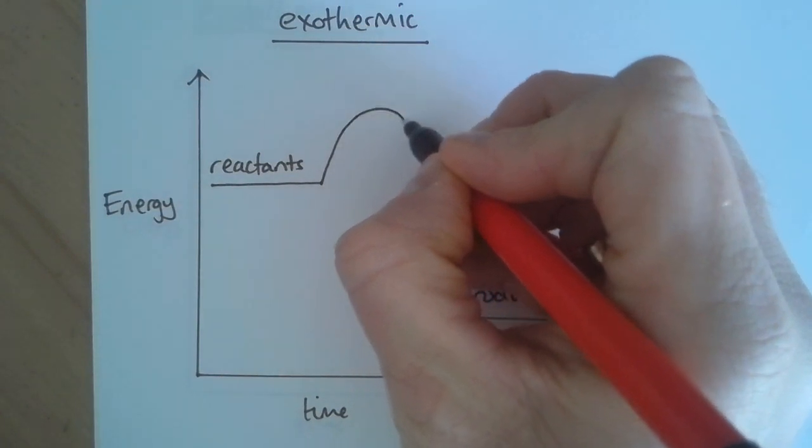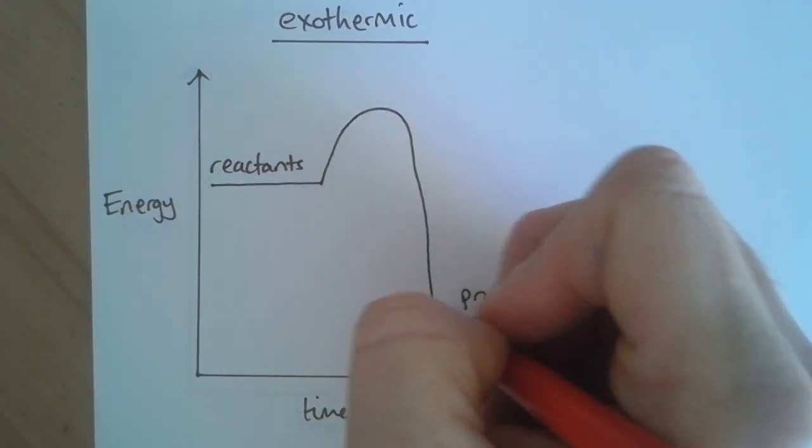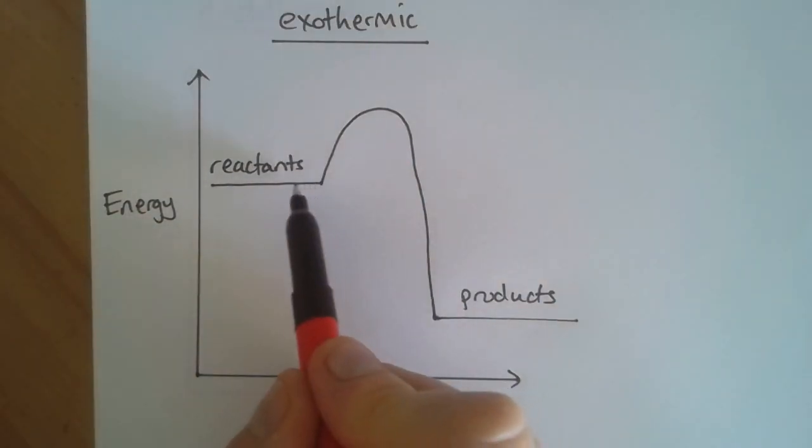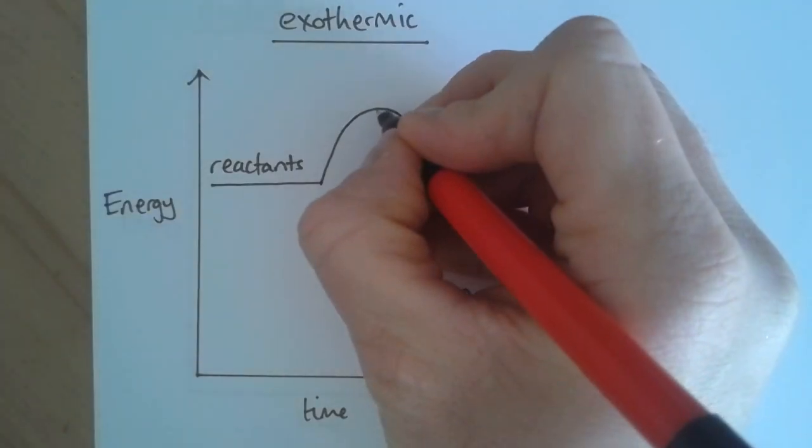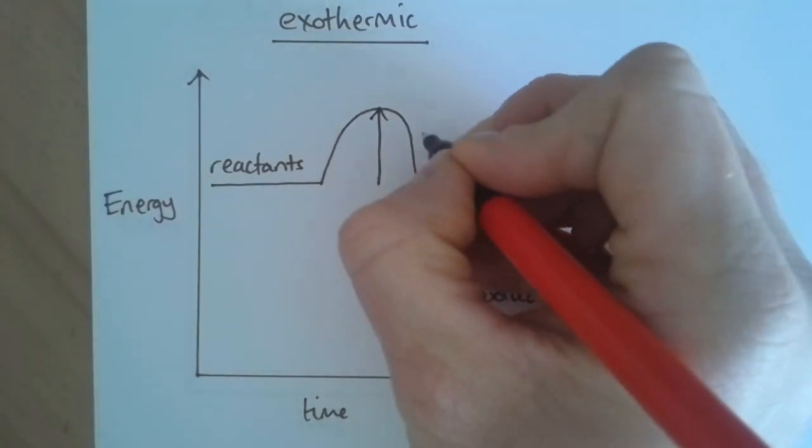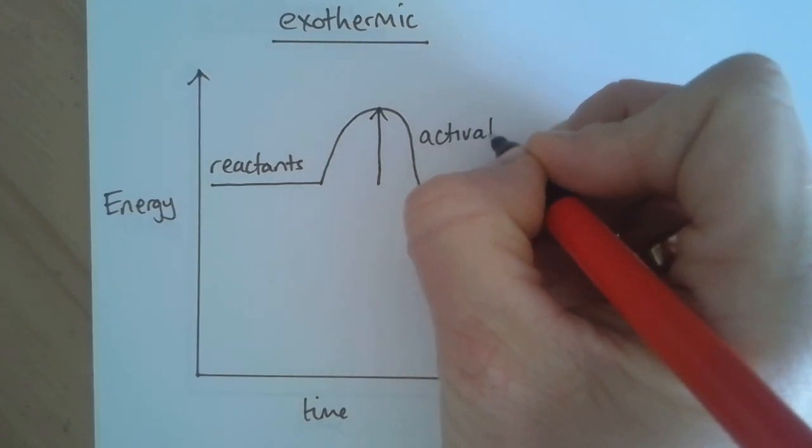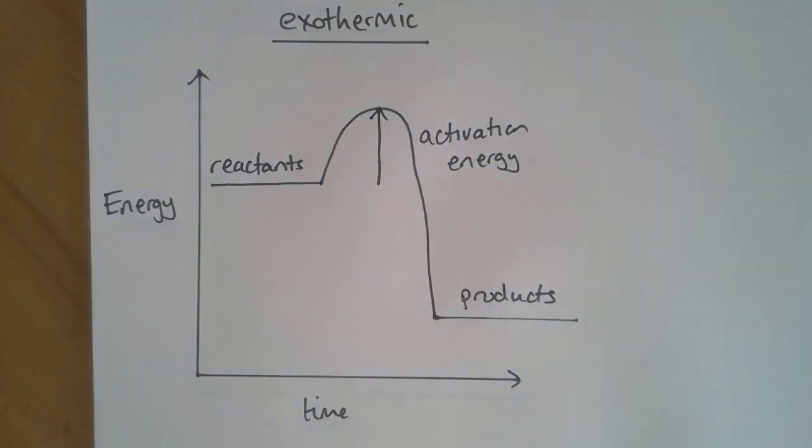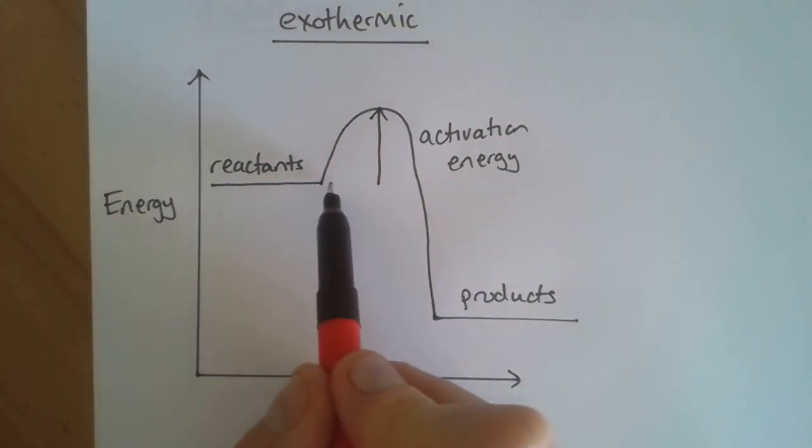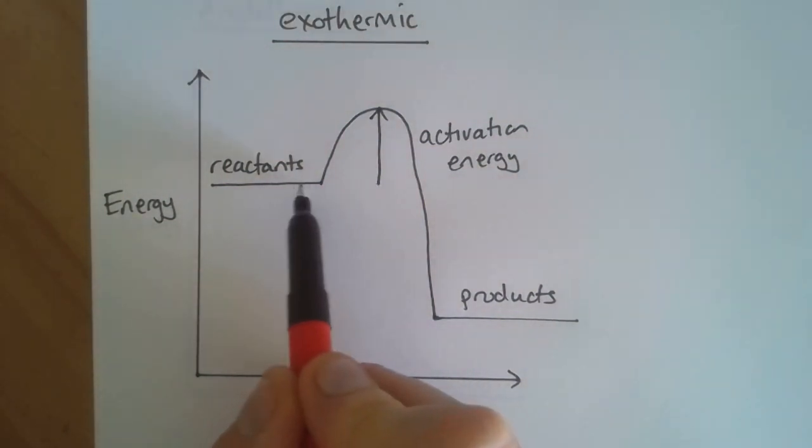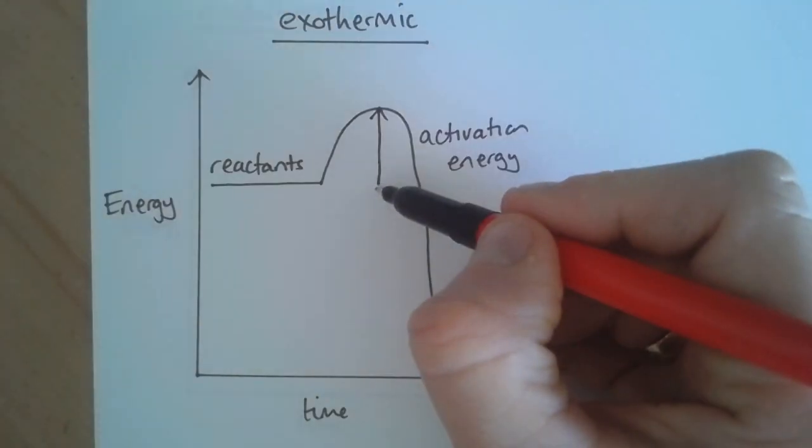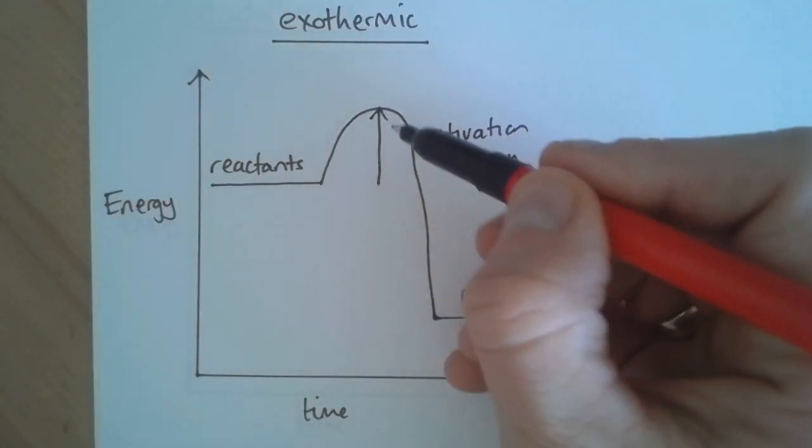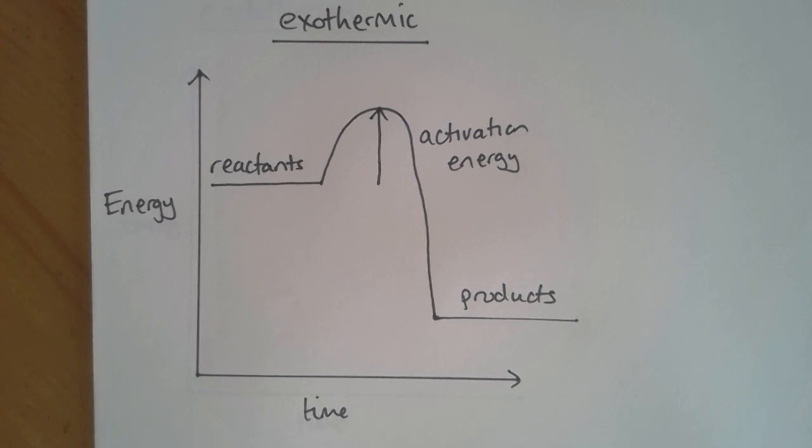There is a hump or a line with a hump here. And the distance from the reactants to the top of this hump is labeled as the activation energy. This is the energy that is needed to start the reaction. It's really important that this arrow starts in line with the reactant line and goes upwards all the way to the top of the peak to show the activation energy.